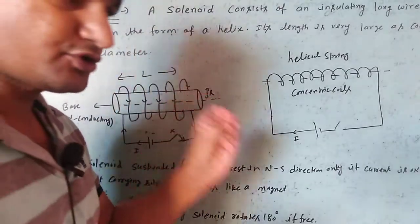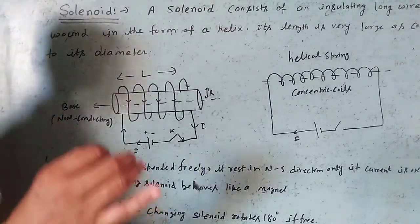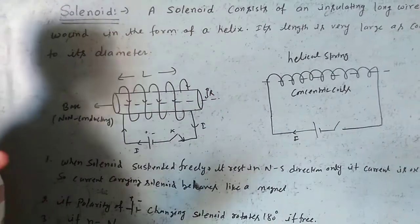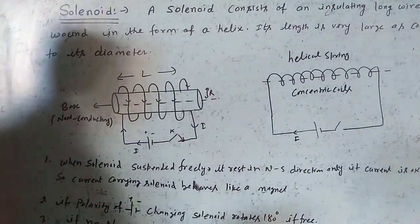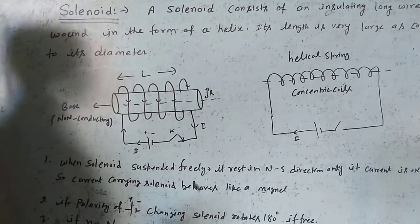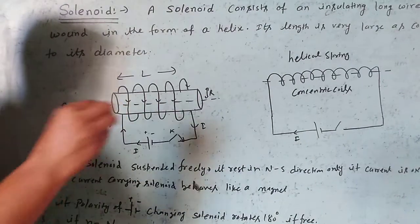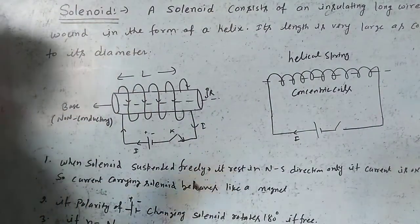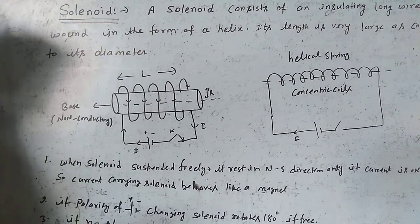Any current-carrying solenoid behaves like a magnet. The number of turns in the solenoid is given as n, equal to the number of turns per unit length.